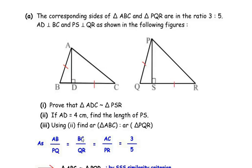So we have written BC over QR, and the last side is AC from triangle ABC corresponding to PR from triangle PQR, giving us AC over PR. All these will be equal to the ratio 3 is to 5, written as the fraction 3 over 5.